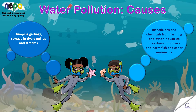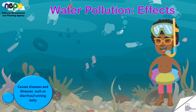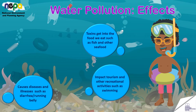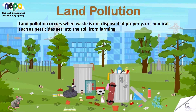Some causes of water pollution are: chemicals from farming and other industries may drain into rivers and harm fish and other marine life. Water pollution causes diseases and illnesses such as diarrhea. Toxins get into the food we eat such as fish and other seafood. It can impact tourism and other recreational activities such as swimming. Water pollution kills over a million marine animals every year.